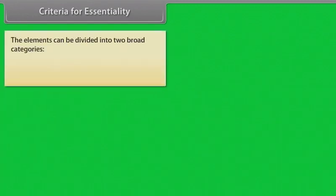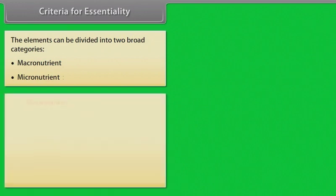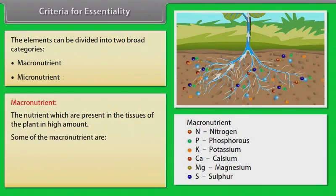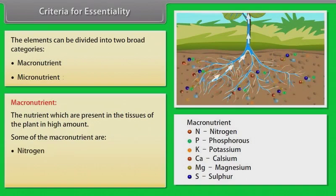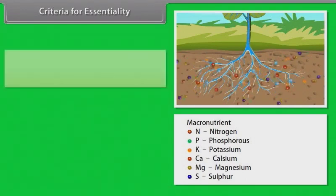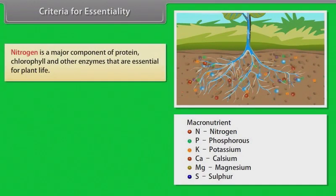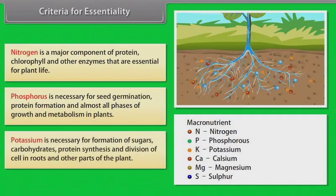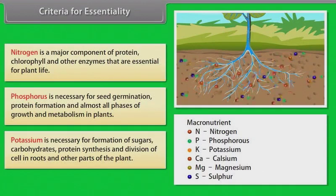The elements can be divided into two broad categories: macronutrients and micronutrients. Macronutrients are the nutrients present in the tissues of the plant in high amounts. Some of the macronutrients are Nitrogen, Phosphorus, and Potassium. Nitrogen is a major component of protein, chlorophyll and other enzymes that are essential for plant life. Phosphorus is necessary for seed germination, protein formation and almost all phases of growth and metabolism in plants. Potassium is necessary for formation of sugars, carbohydrates, protein synthesis and division of cells in roots and other parts of the plant.